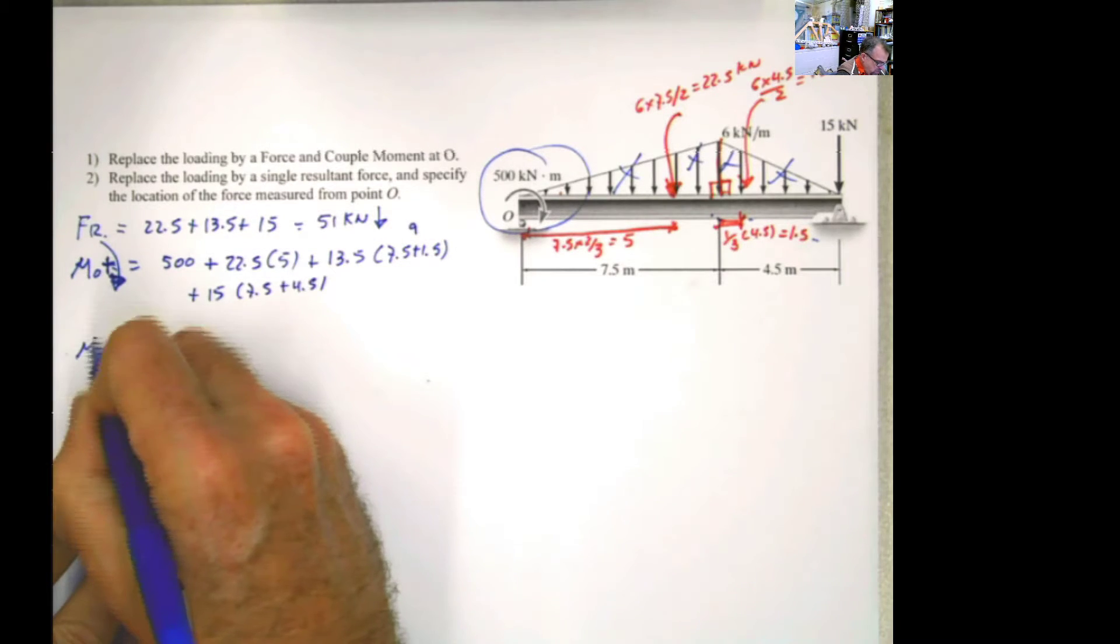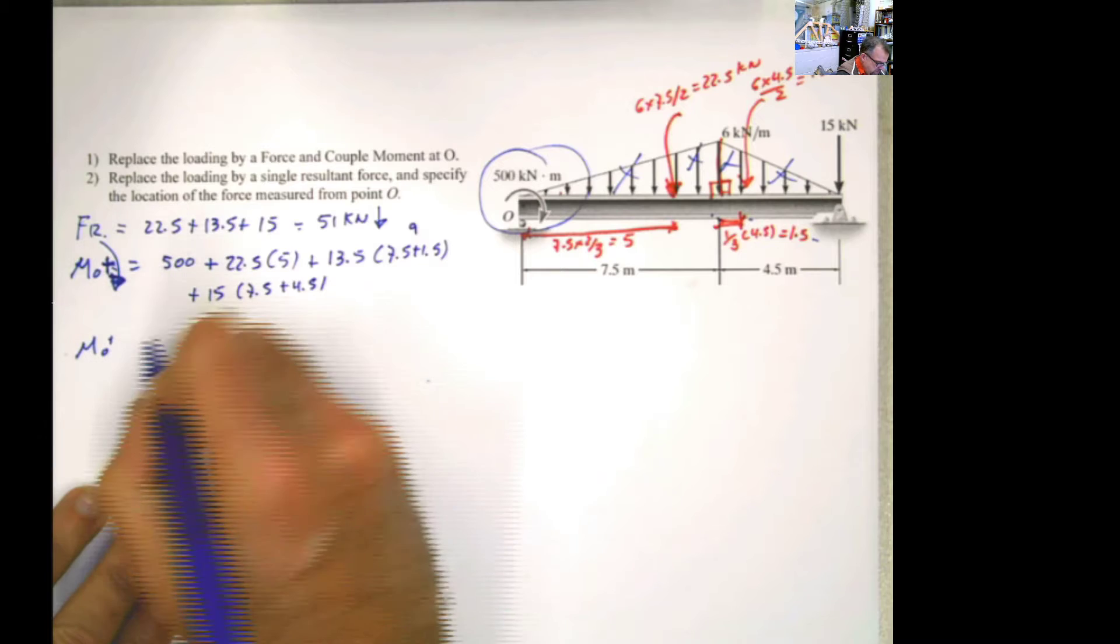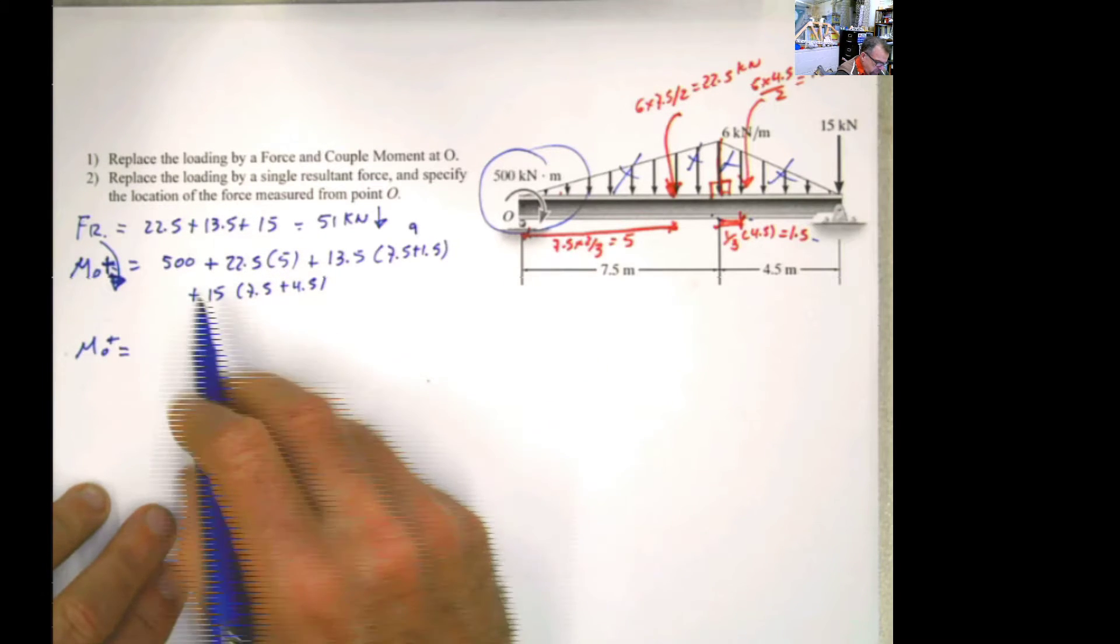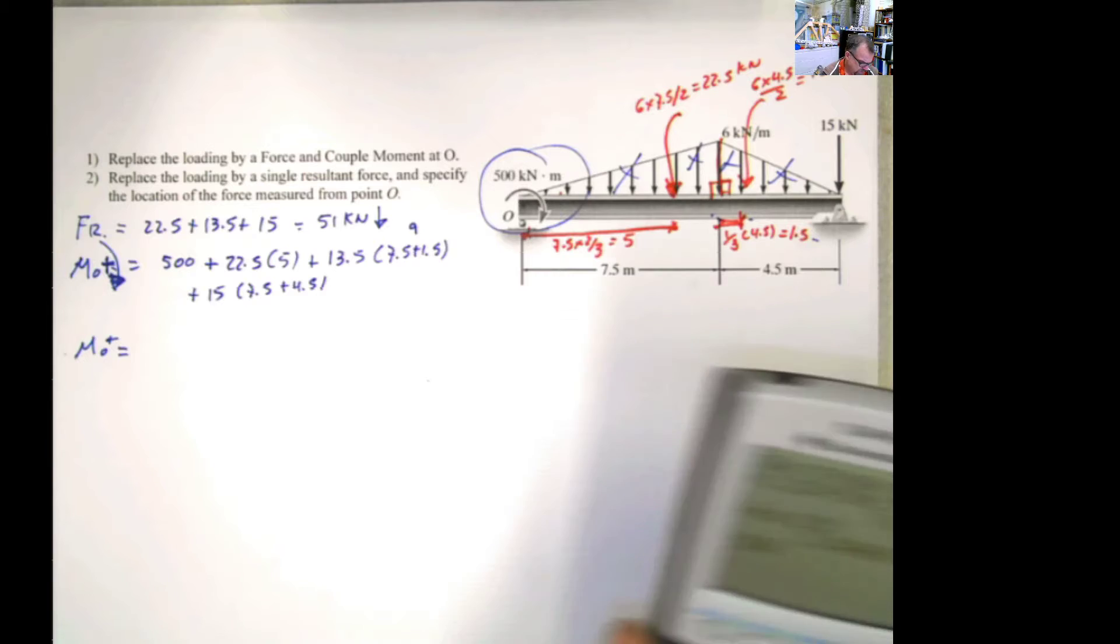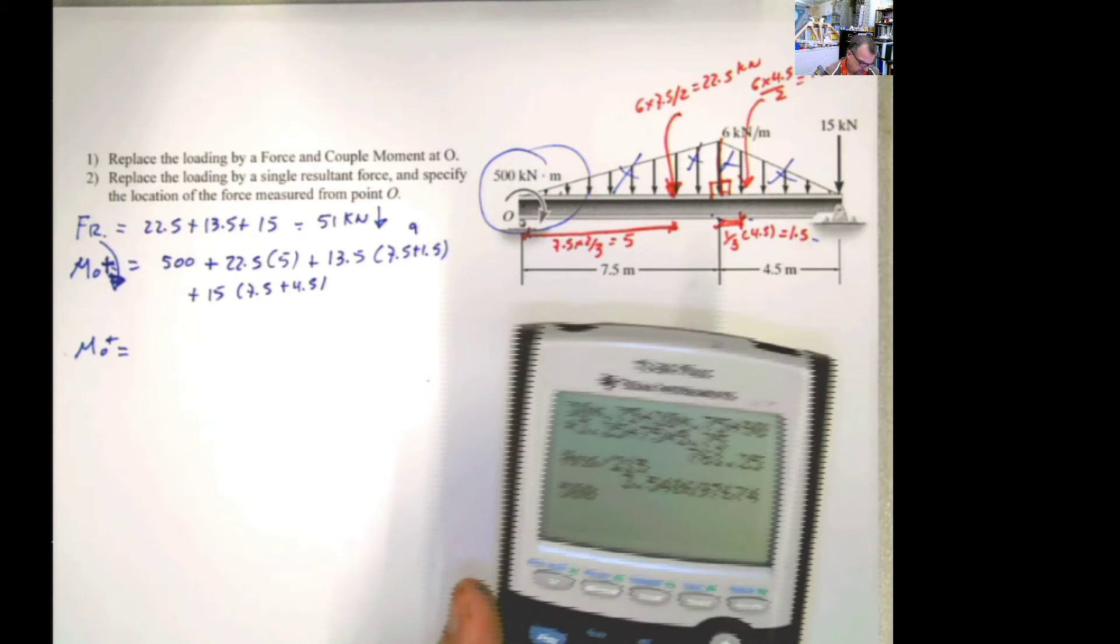And then the distance is going to be 7.5 plus 4.5. So the resultant moment at O will be this plus this. Let me do it again. Always repeat it again and again. Two times at least.